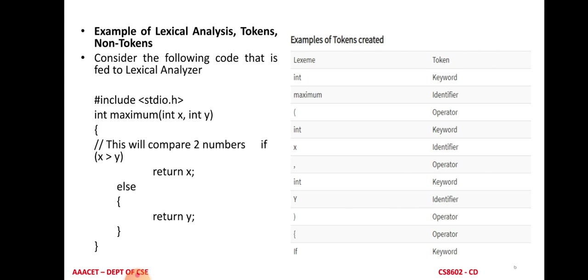A token is a sequence of characters with some collective meaning. For example, 'int' means integer — it gives meaning or information for that particular lexeme. So 'int' is a keyword, and it carries meaning for the corresponding lexeme in the source program.